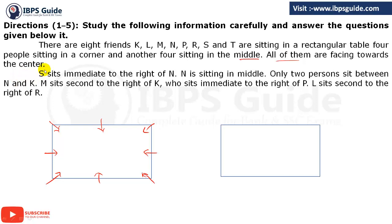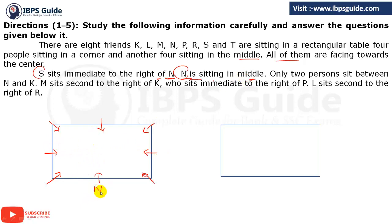Now let's see the information. S sits to the immediate right of N, and N is sitting in the middle. S is to the immediate right of N and N is at the middle. As I mentioned earlier, in a rectangle or square arrangement, you need to fix the first person at the middle or corner. They have already said N is sitting in the middle, so you can place N anywhere in the middle. Suppose N is here — then S will come to the immediate right of N.